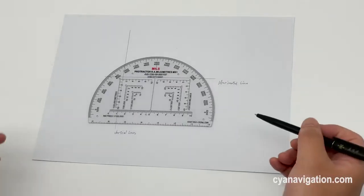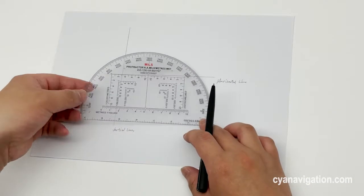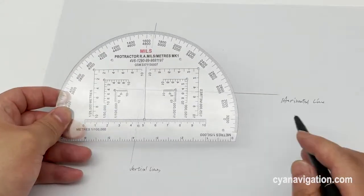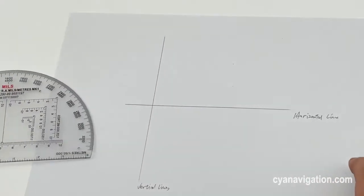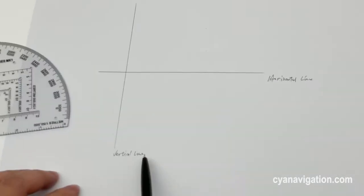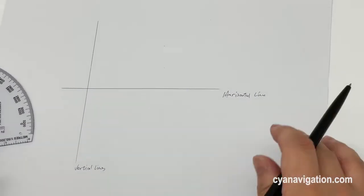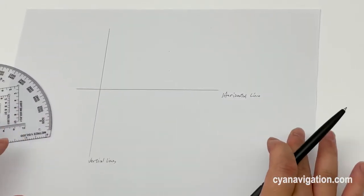Hello, today we'd like to introduce how to use this protractor for plotting bearings on the map. Here on the paper we already joined the vertical lines and horizontal lines, so we'll just assume there is a map on this table.